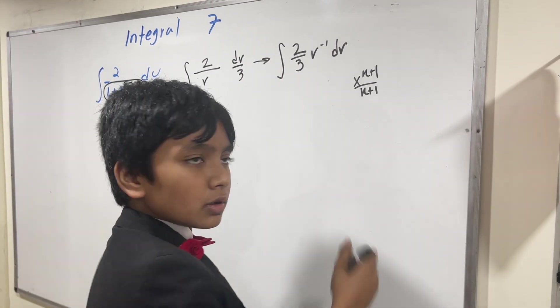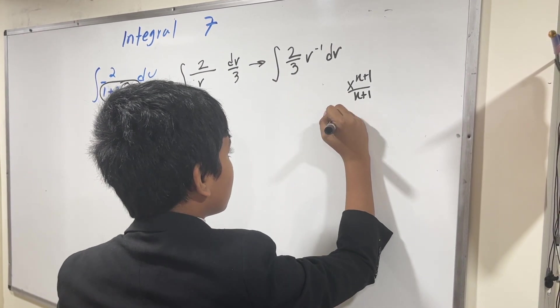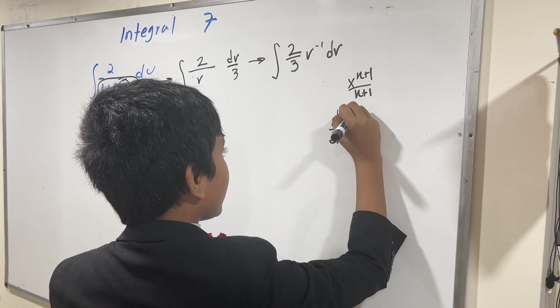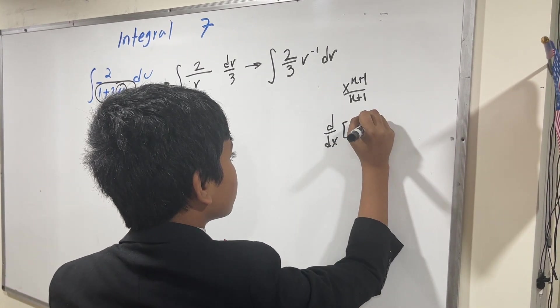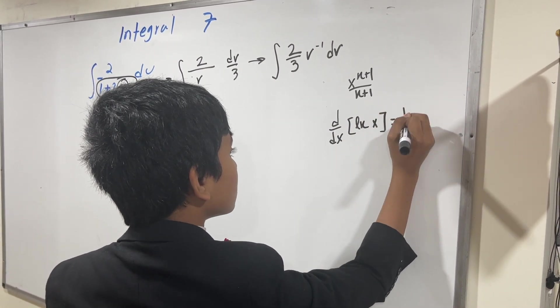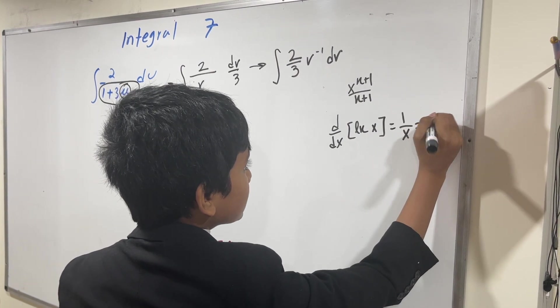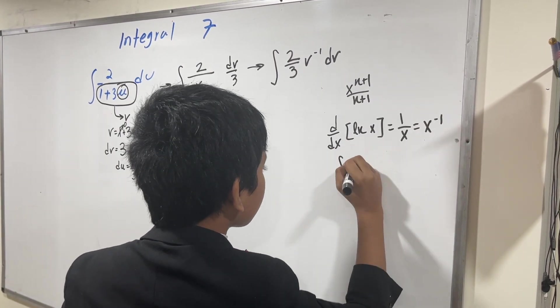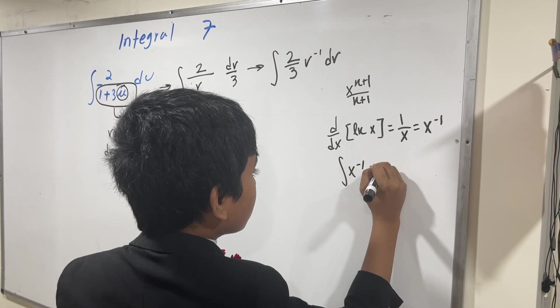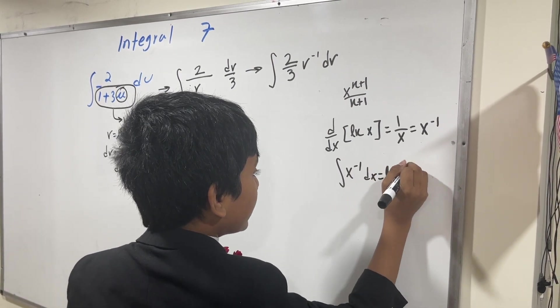Well, do you remember how the derivative of ln of x was 1 over x? Well, that is also x to the minus 1. So naturally, the integral of x to the minus 1 is just ln x.